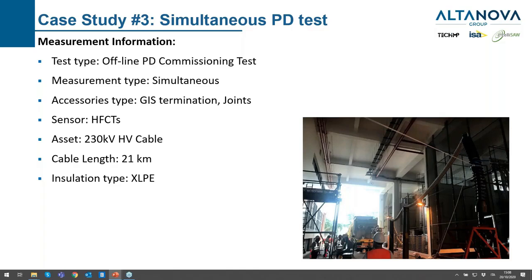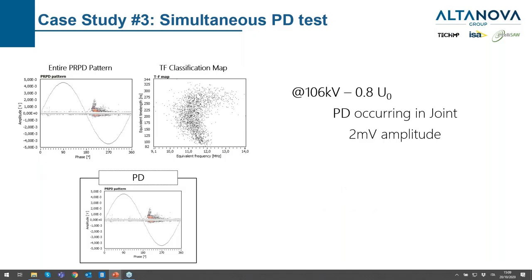Another long circuit simultaneous PD test was an offline commissioning test. GIS terminations on both sides and joints in the middle; we were using HFCTs. The cable length was 21 km. We had a permanent monitoring system installed and were taking advantage of the permanent monitoring hardware to perform offline spot testing. It was possible to see a very small PD activity in one joint — 2 mV at 106 kV, which triggered the attention of the testing team.